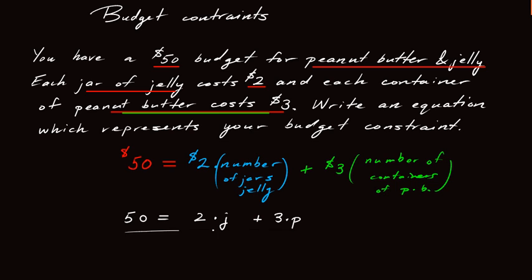So this would be my budget constraint. That's it. It tells me how much jelly, how much peanut butter, and combines to give me my total budget of $50.